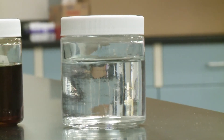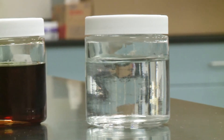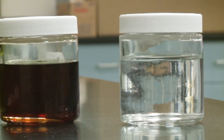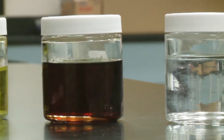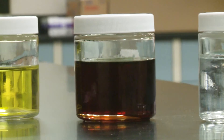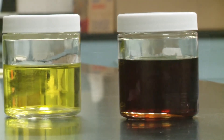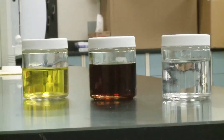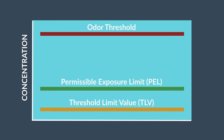TDI is typically a clear, water-white to pale yellow liquid. However, some polymeric and TDI pre-polymeric mixtures can be colorless or water-white to dark brown. It has a sharp, pungent odor that can be very irritating to the respiratory system. The odor threshold for TDI is above the established exposure limits; therefore, odor should never be used to indicate the presence of TDI.